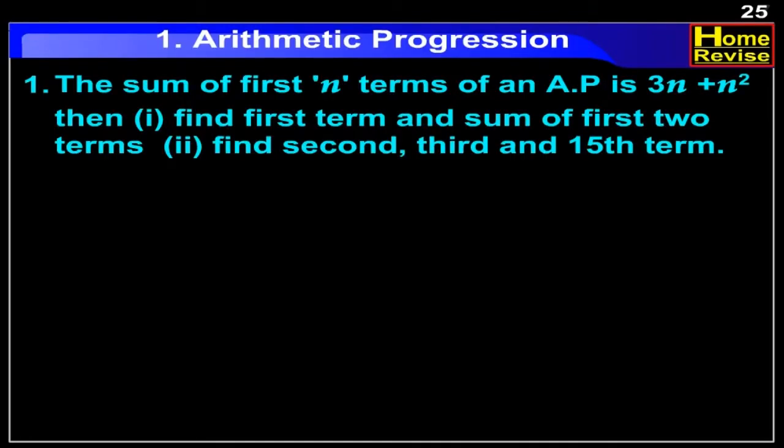The sum of first n terms of an arithmetic progression is 3n plus n square. Number 1: find the first term and sum of first two terms.